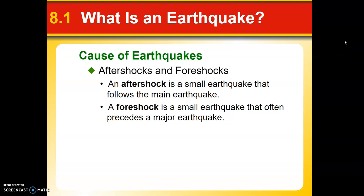Aftershocks and foreshocks are just the precursors and after-effects of a major earthquake. An aftershock is a small earthquake that follows the main one, and a foreshock is the only real precursor that tells us an earthquake is coming. It's not like a tornado, where we can follow weather patterns on the maps and know it's coming — with an earthquake, there's not a lot of warning.